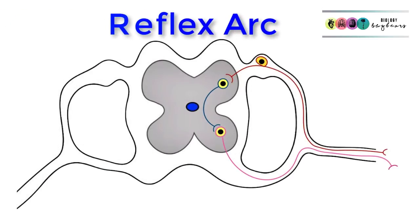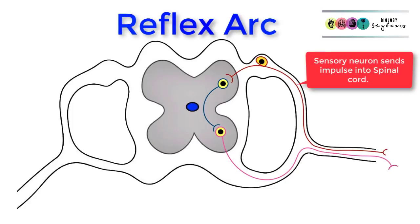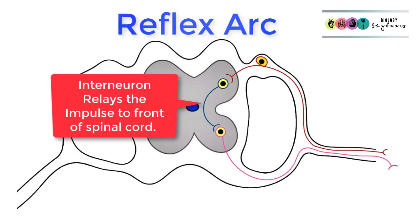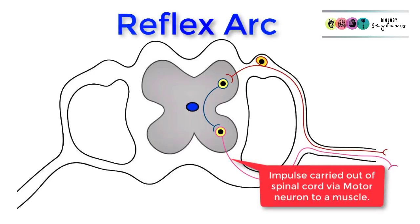When we discuss reflex arcs for exams, we're talking about the role played by three neurons in carrying out reflex actions. The sensory neuron sends the impulse into the spinal cord via the dorsal root. Interneurons then pass the impulse towards the front of the spinal cord to a motor neuron, which sends the impulse out via the ventral root towards a muscle or gland.